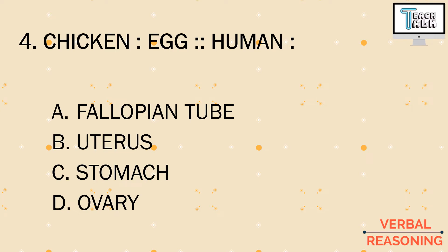Number four: chicken is to egg, human is to blank. Options: a) fallopian tube, b) uterus, c) stomach, or d) ovary. The relationship of chicken and egg refers to how an organism is nourished — the chicken is nourished inside the egg. Using that analogy, how is a human fetus nourished before going out into the world? It is not the fallopian tube or the stomach. A human being, prior to being born, is nourished inside letter b) uterus.